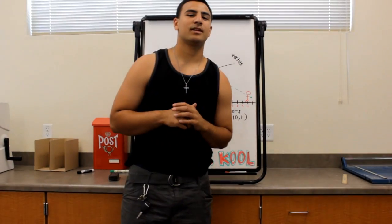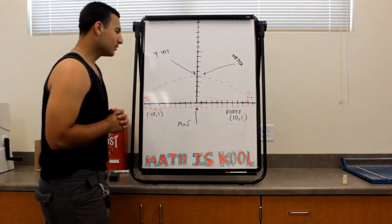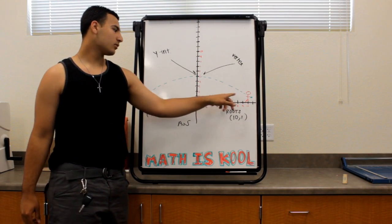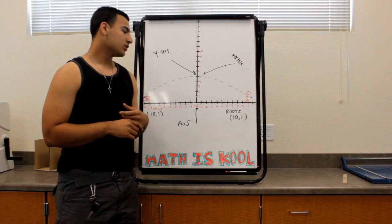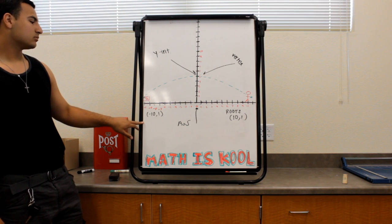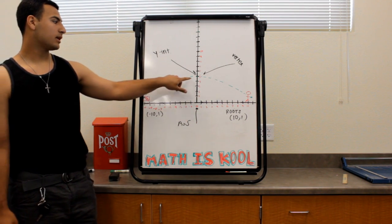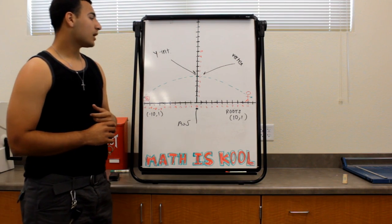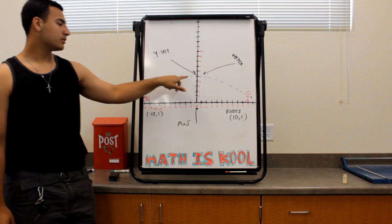My name's Enrique, and I'll be explaining the problem as I throw the football. Say I'm standing 20 yards away from a trash can, and I throw the ball up 5 yards in the air, directly above the trash can. So we already know our roots, which are (10, 0) and (-10, 0). Our axis of symmetry is 0, because we're calculating it from where the ball reached its highest point. Where the ball reached its highest point is also known as the vertex and the y-intercept, which is 5.